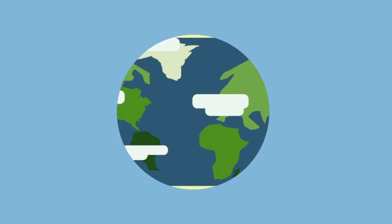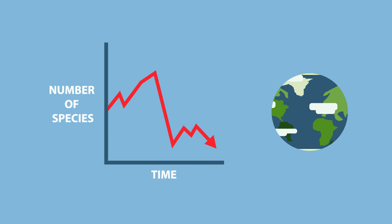From time to time an event takes place on Earth which causes a mass extinction. These mass extinctions are identified by a significant and often devastating change in the number and variety of organisms alive at one time.